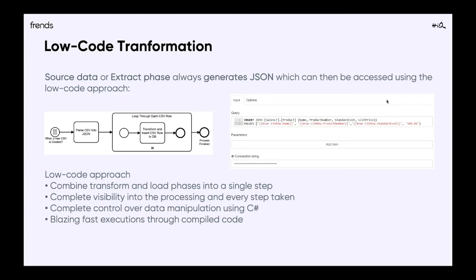On the right side, you can see a configuration of the service task called 'Transform and Insert CSV Row to DB.' Inside there, you can see the query where you have the INSERT clause, the table, the parameters, the actual values, and finally the connection string. The low-code approach combines and transforms the load phases into a single step. It's easy to use — you have complete visibility into the processing and every step taken. You can see what happens at each step, and you have monitoring capabilities inside the platform showing what happens in each parsing phase, how the data is manipulated, and what the next step will be. You have full transparency over the process.